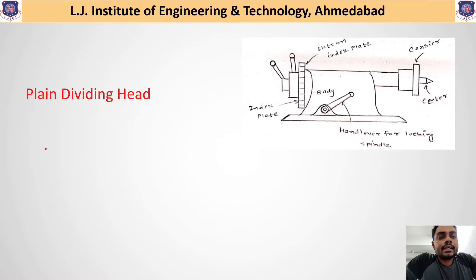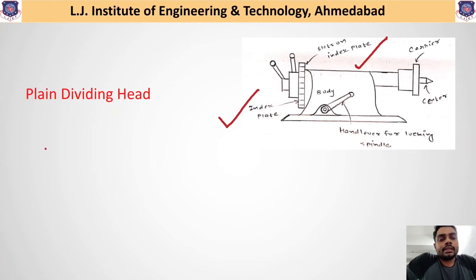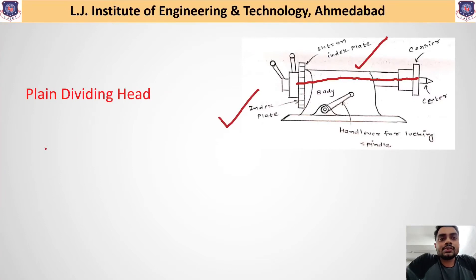The plain dividing head consists of an indexing plate which has different number of slots available on it. This index plate is directly connected to the spindle, and this spindle is connected to the workpiece — that means one end of the workpiece is attached to this dividing head.